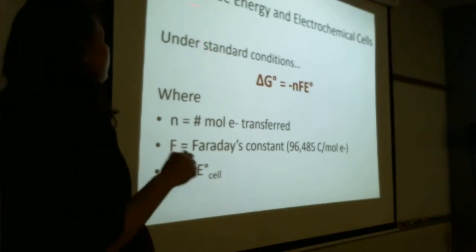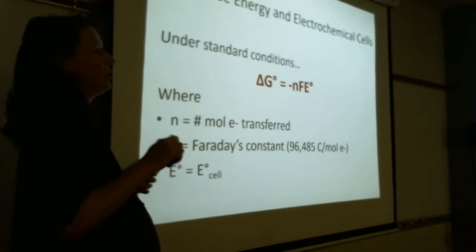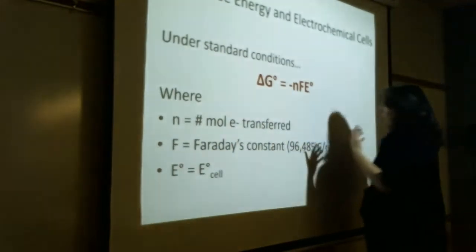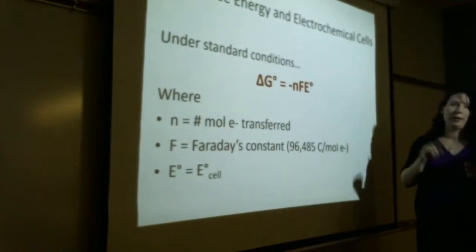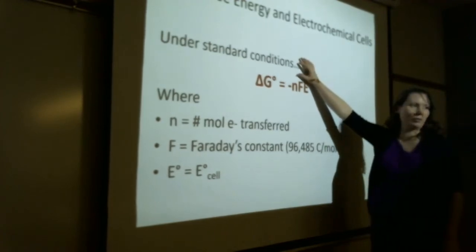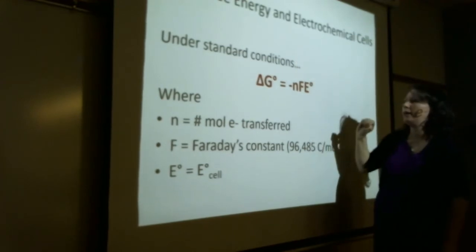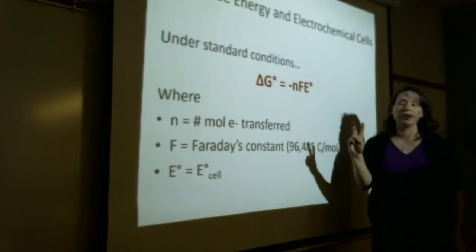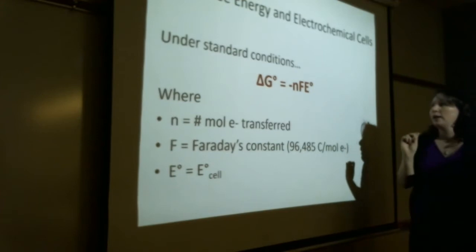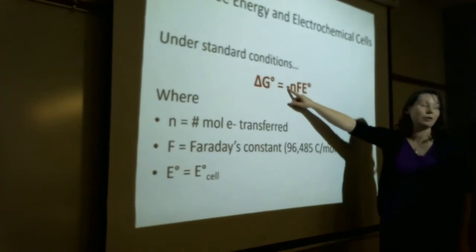We can't forget Gibbs free energy — anytime we talk thermodynamics, Gibbs free energy needs to come into the picture. Gibbs free energy tells us quantitatively whether a process is spontaneous or non-spontaneous. Under standard conditions — concentration of one molar, temperature 25 degrees Celsius — delta G is negative. That negative is built in: delta G = -nFE°cell.